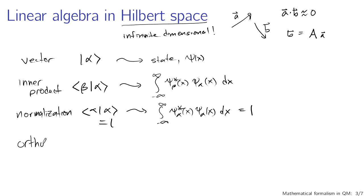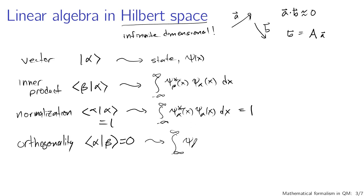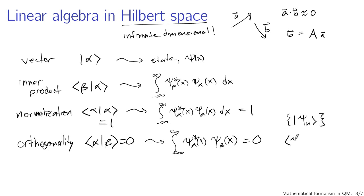We can also talk about orthogonality. In linear algebra, orthogonality refers to vectors being perpendicular — in infinite dimensions it's harder to visualize, but just as easy to write: the inner product of alpha and beta equals zero means these vectors are orthogonal. In integral language, the integral from minus infinity to infinity of psi-alpha-star of x times psi-beta of x equals zero. If these come from solutions to the time-independent Schrödinger equation, we have a set of states psi sub n such that the inner product of psi sub n with psi sub m gives a Kronecker delta — expressing orthonormality.